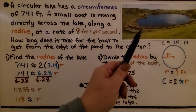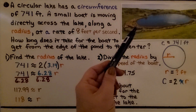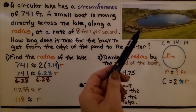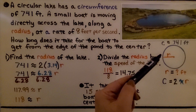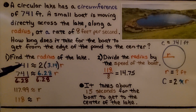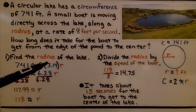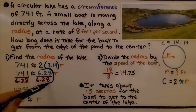Now we have a word problem. A circular lake has a circumference of 741 feet. A small boat is moving directly across the lake along a radius at a rate of 8 feet per second. How long does it take for the boat to get from the edge of the lake to the center? First, we find the radius: circumference equals 2πr, so we substitute. We do 2 times 3.14 to get 6.28, using an approximation symbol, then divide both sides by 6.28.